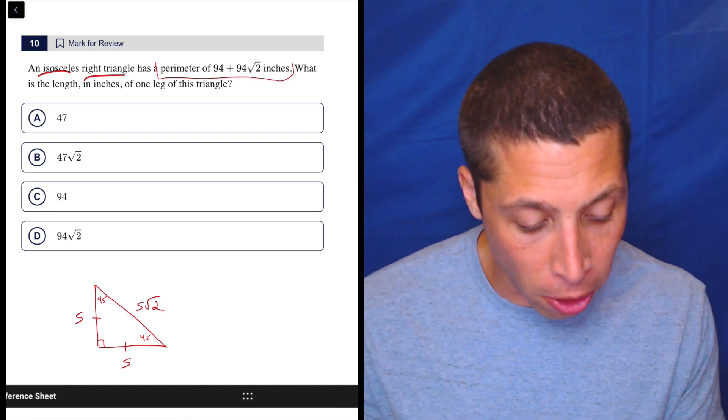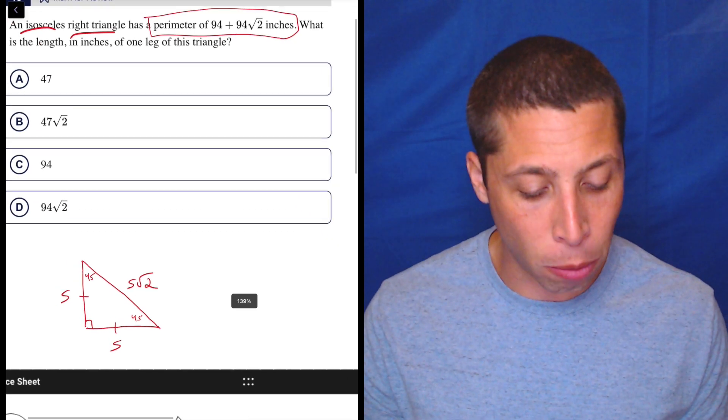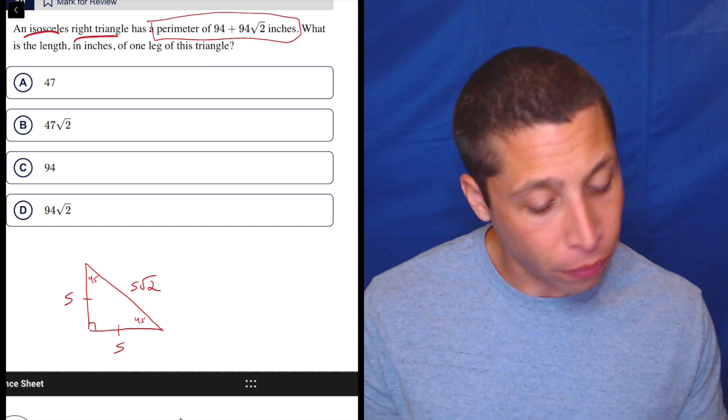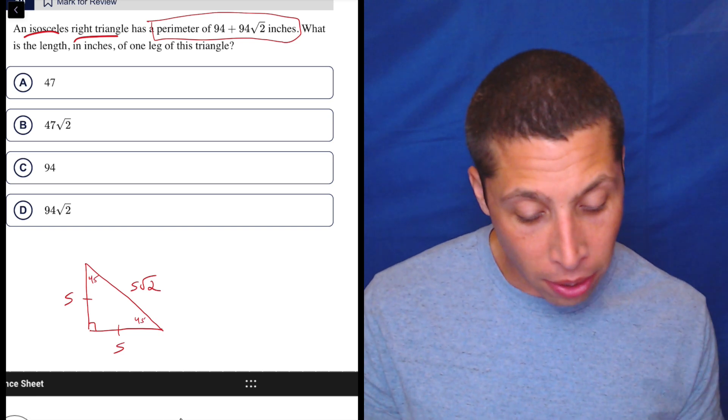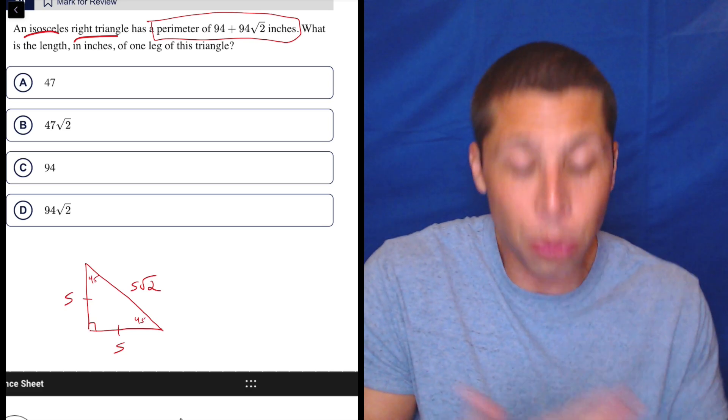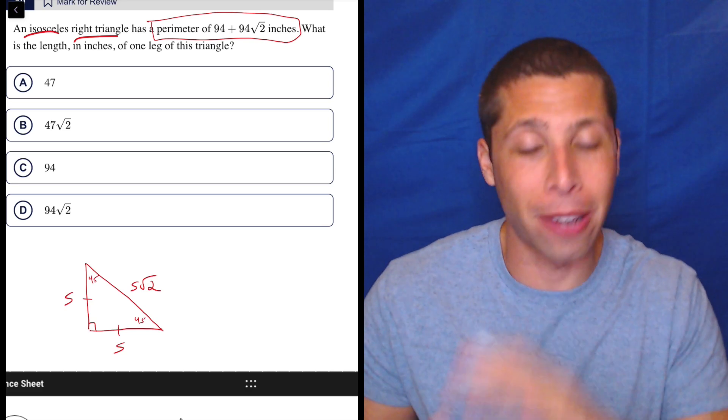Let's focus now on the other piece of information they gave us. The perimeter is 94 plus 94 root 2. So we've got to be careful here. Some of you are just going to be like, oh, the length of one of the legs then is 94 because that 94 root 2 corresponds to the root 2 side. That's the hypotenuse. No, no, no,